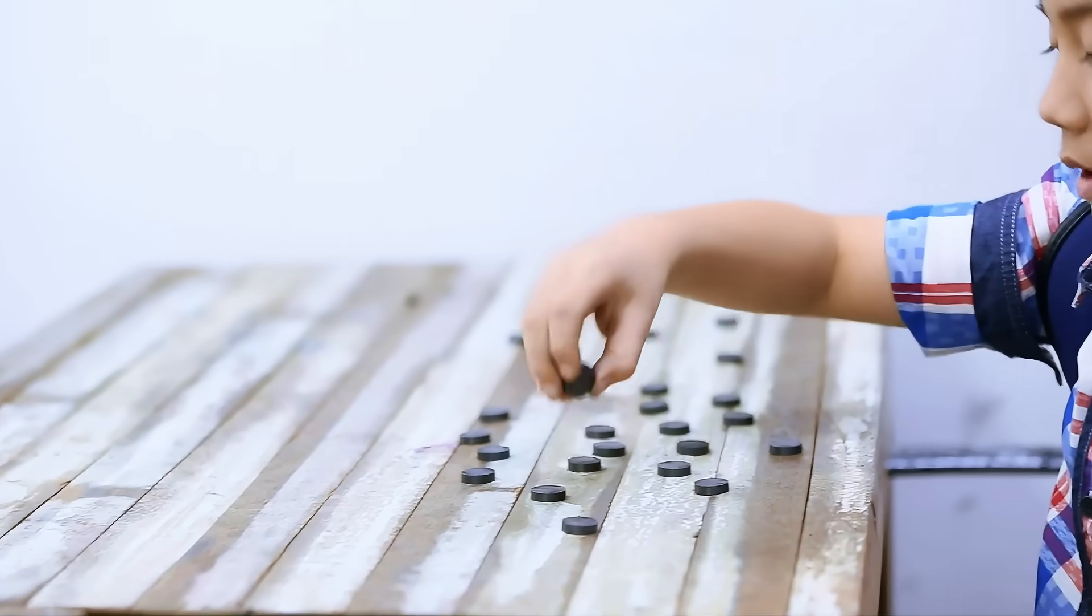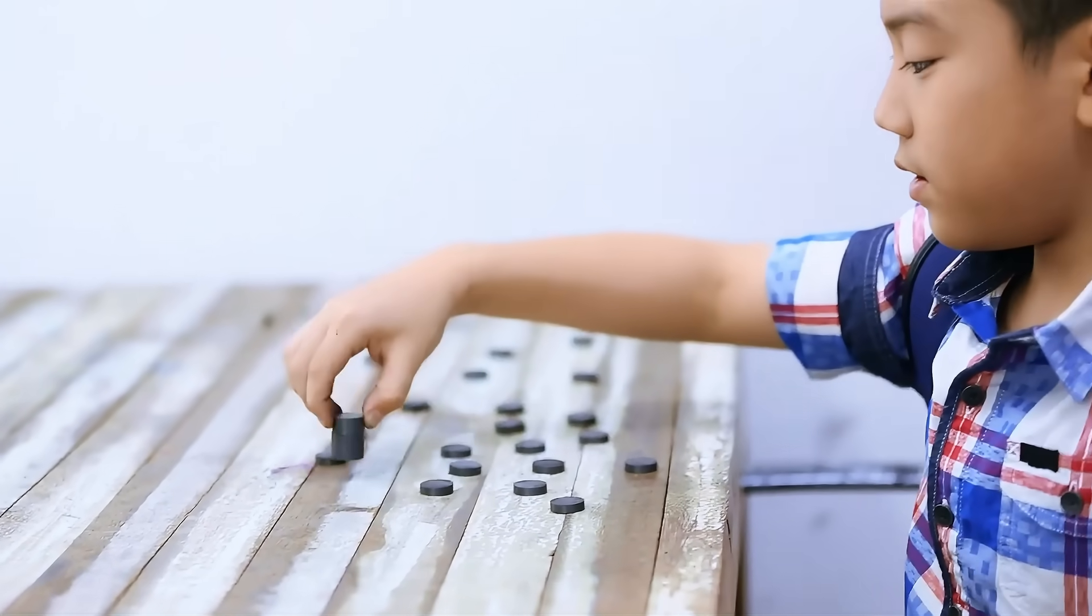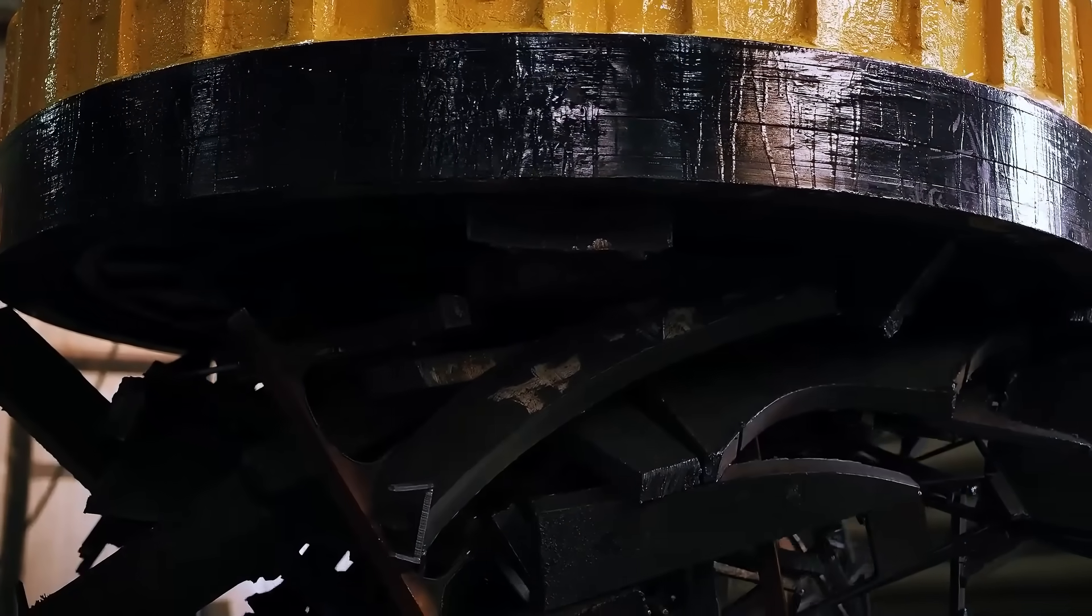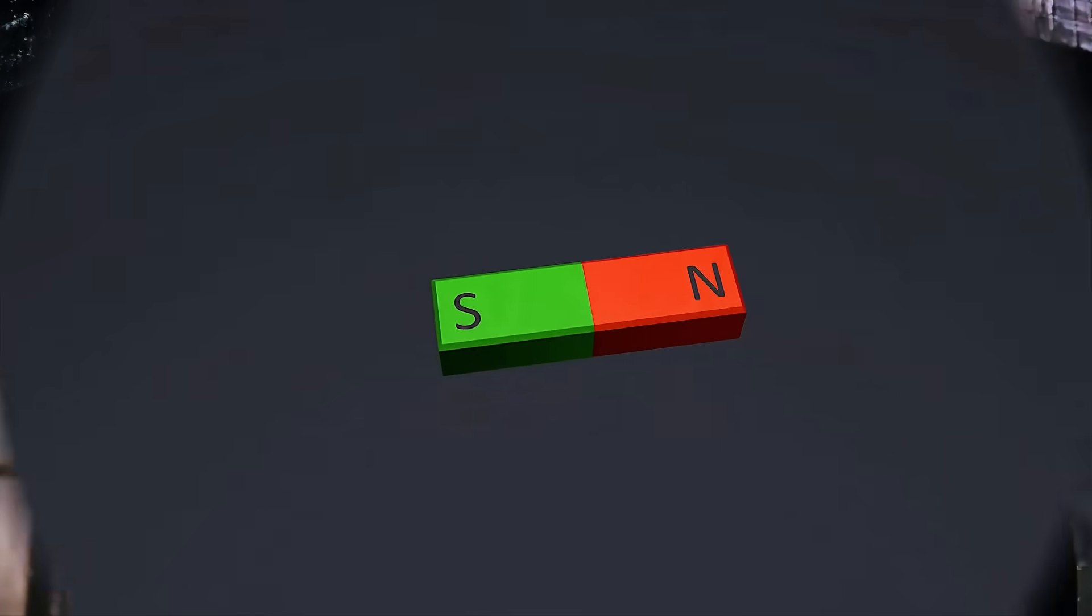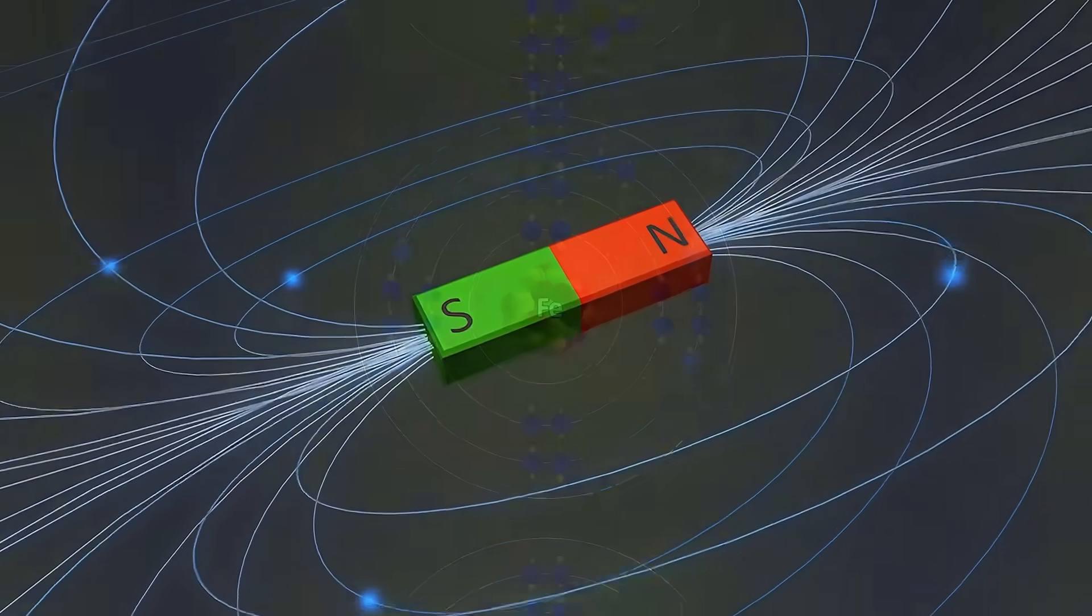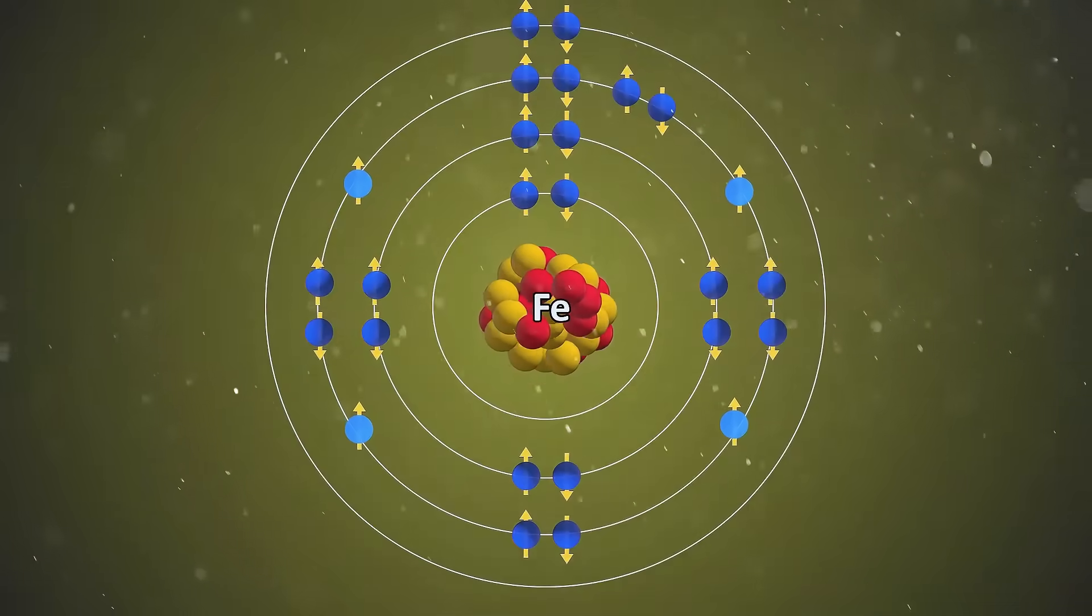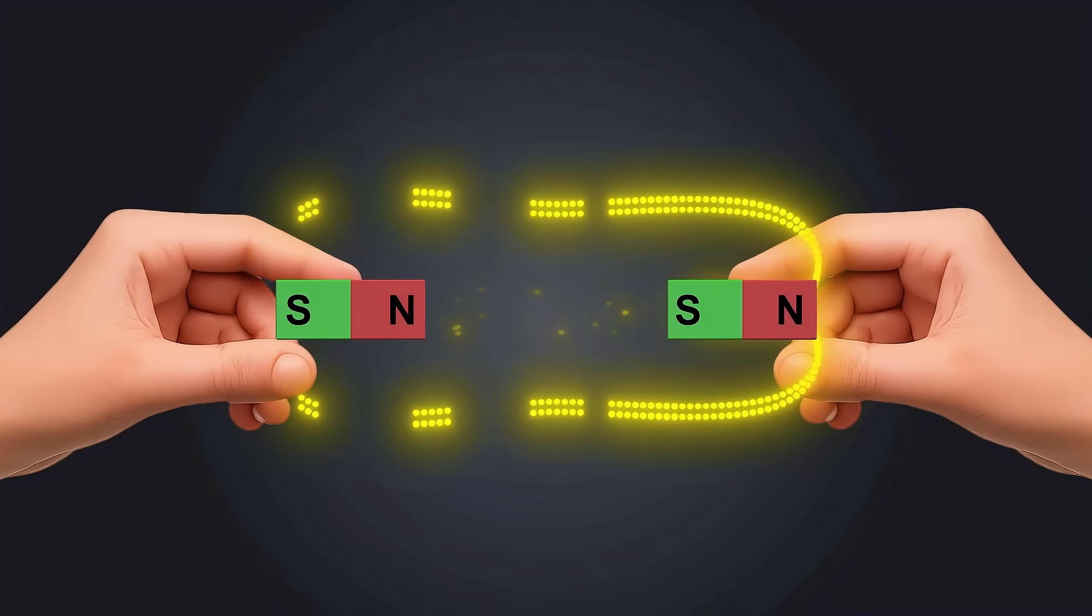You've seen this a thousand times. Magnets pulling things. Even with very large weights, it almost seems magical that this invisible force can be so powerful. Why do magnets attract? What is the mechanism? What's actually happening behind the scenes at the atomic and quantum level?